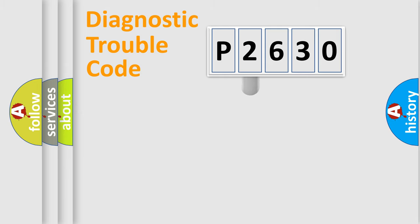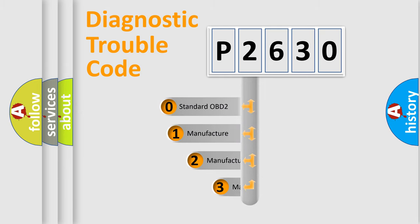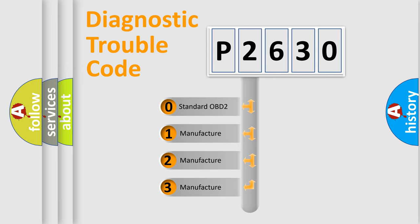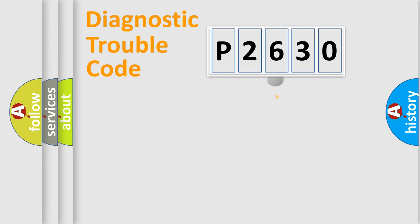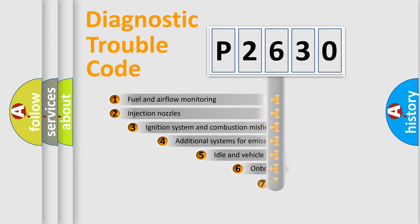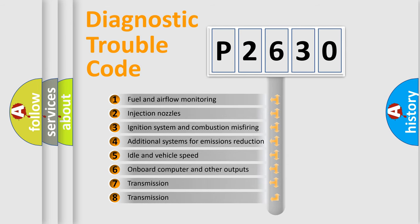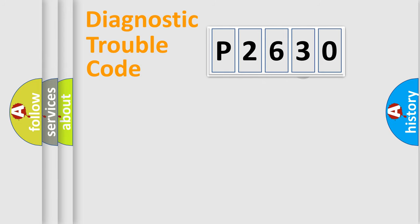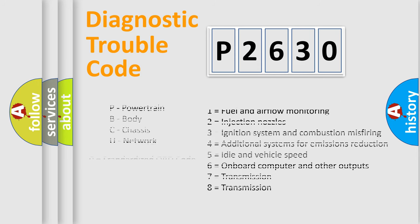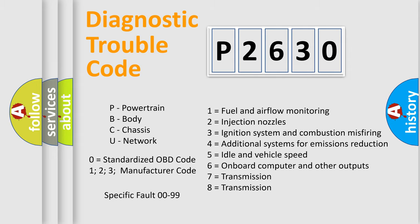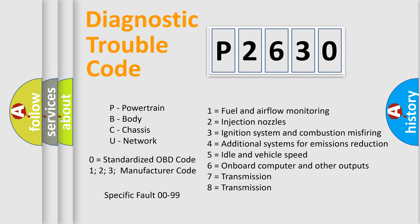This distribution is defined in the first character of the code. If the second character is expressed as zero, it is a standardized error. In the case of numbers 1, 2, or 3, it is a more specific expression of a car-specific error. The third character specifies a subset of errors. The distribution shown is valid only for the standardized DTC code. Only the last two characters define the specific fault of the group, and this division is valid only if the second character is expressed by the number zero.